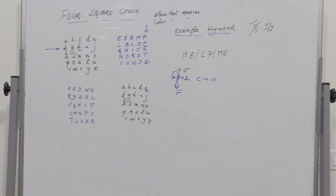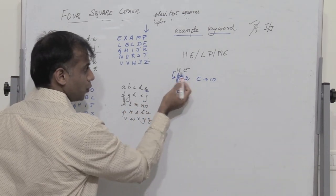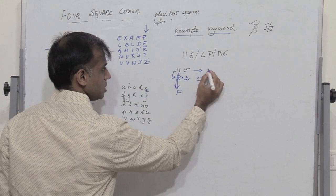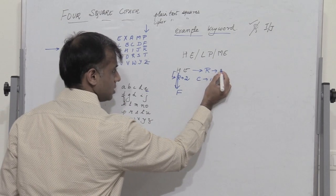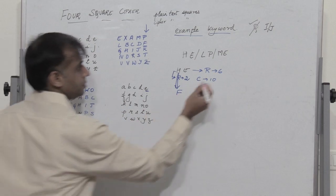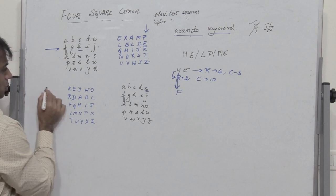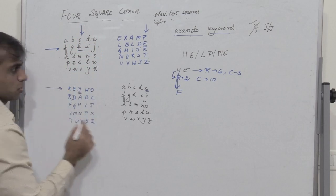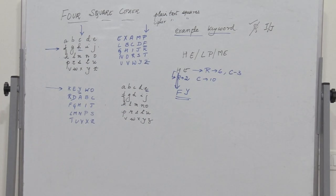Now to replace E: I find the row position of E in the bottom-right plain text square, which is row 6 (5 plus 1 = 6), and the column position corresponding to H, which is column 3. Row 6 and column 3 in the upper-right ciphertext square corresponds to Y. So HE is replaced by FY.